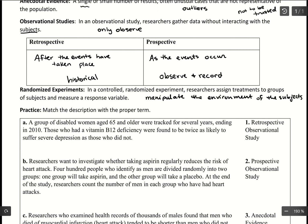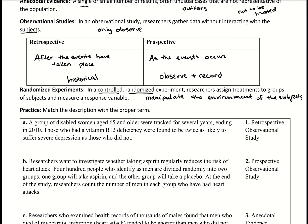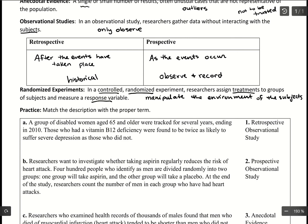Part of a randomized experiment is being controlled — there's a control group within the experiment. The groups are created using randomization, and researchers assign a treatment, which is what they're manipulating in the environment, whether giving a drug, playing classical music, or having subjects wear a certain color. Then they measure the response variable: what they're recording that they want to see change.